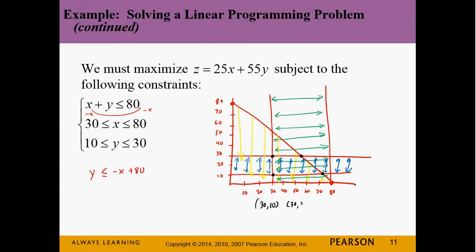This point at (30, 30), and then this point — let's see, it's supposed to be (50, 30). Remember, on the diagonal line x + y = 80, the points go: (70, 10), (60, 20), (50, 30), (40, 40), (30, 50), (20, 60), (10, 70), (0, 80). So the four corner points of our feasible region are (30, 10), (30, 30), (50, 30), and (70, 10). If you use graph paper, which is always recommended for linear programming, you can clearly see where these points are.